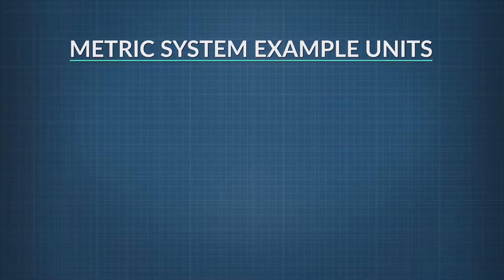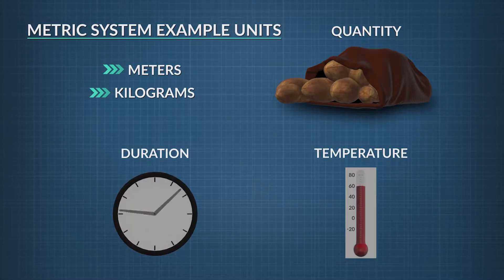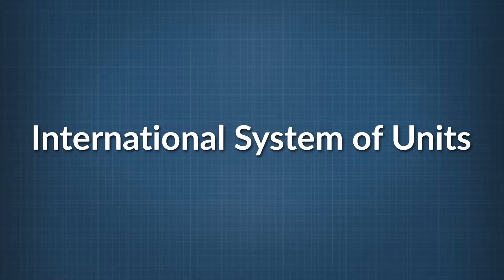The SI system defines and sets standards for various measurements so everyone is measuring the same way. It uses the metric system, which the French came up with about 300 years ago. The metric system uses units like meters and kilograms to describe quantities, durations, temperatures, and other things that need measuring. Over the years, other countries began to use the French standards. Eventually they established the SI, which was first published in 1960, and it made scientific progress much easier.